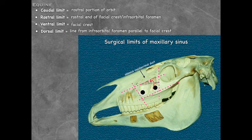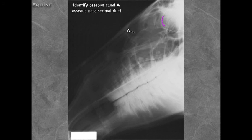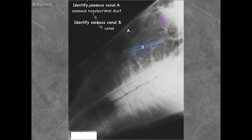Trefining points are used primarily for tooth root abscesses. On a radiograph, the osseous canal medial to the orbit is the osseous nasal lacrimal duct, and the other structure visible is the infraorbital canal.